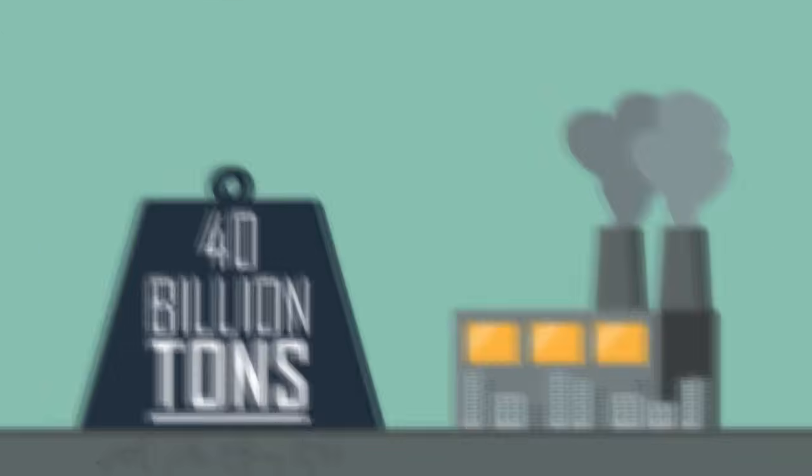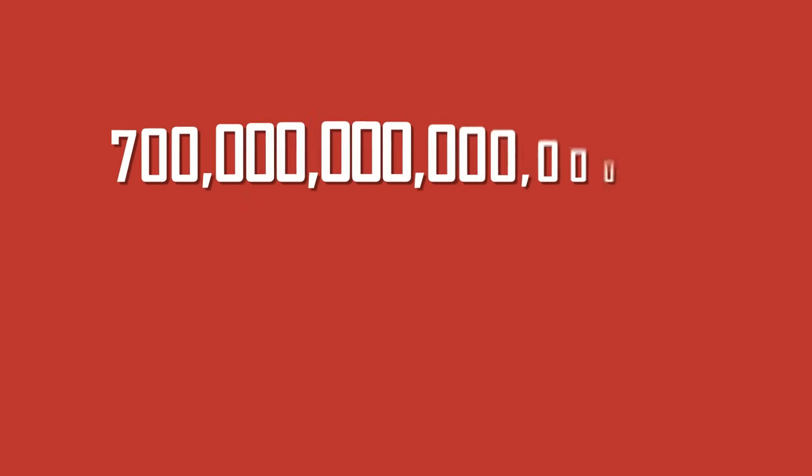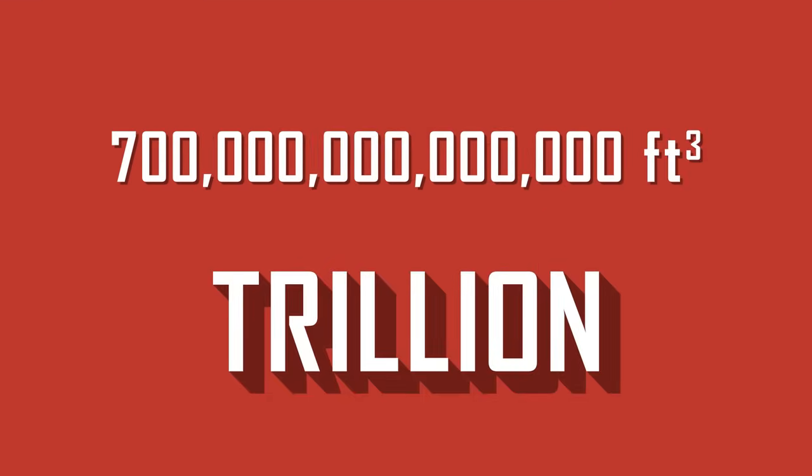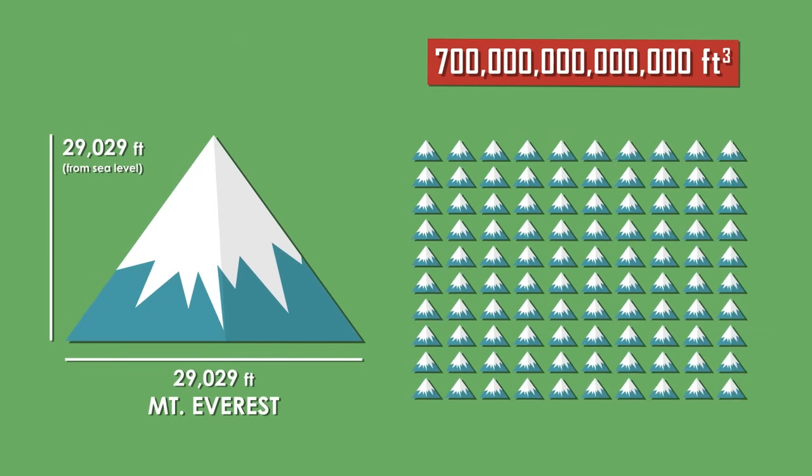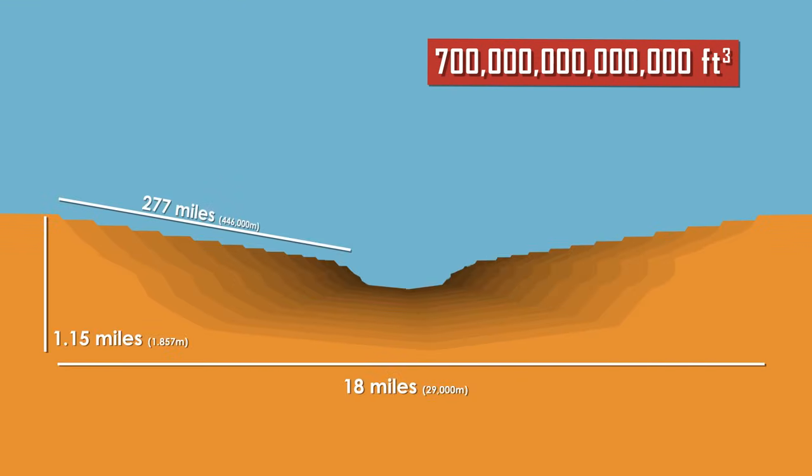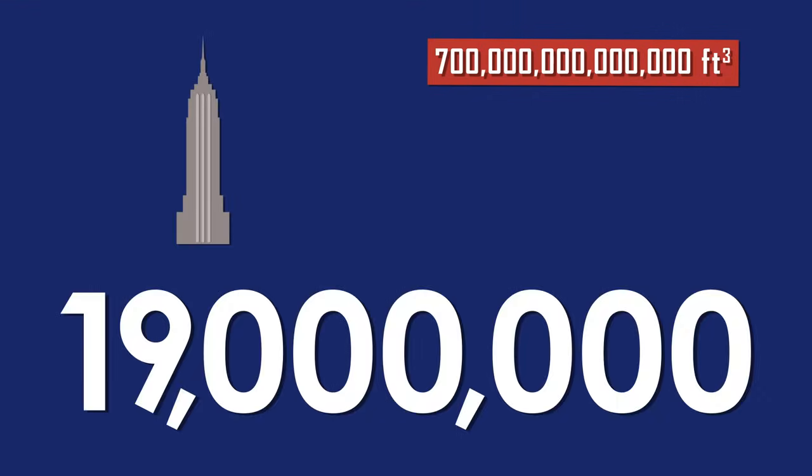But how do we know that our human activity is the cause of accelerated climate change and not the earth's natural process? Our civilizations produced a devastating 40 billion tons of carbon dioxide last year, which equals 700 trillion cubic feet of CO2. That's a little more than 100 Mount Everests of CO2. It's enough CO2 to fill the entire Grand Canyon five times, or the equivalence of 19 million Empire State buildings.